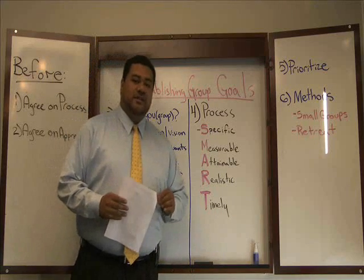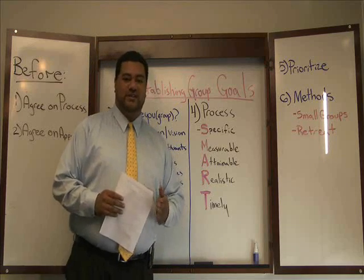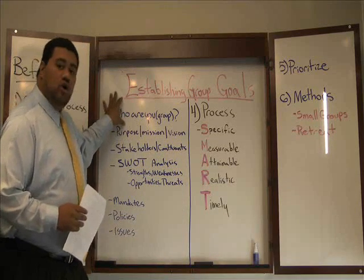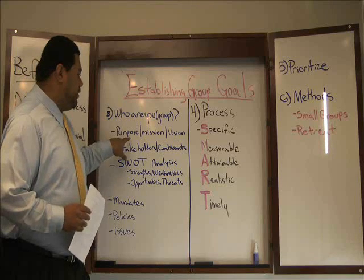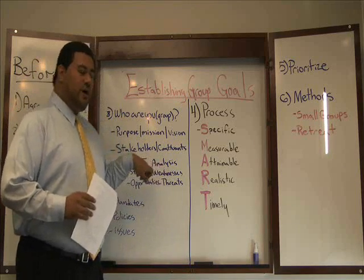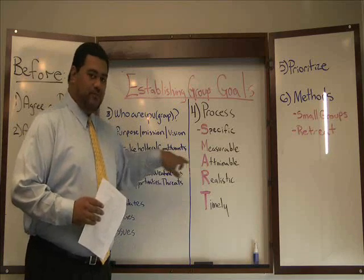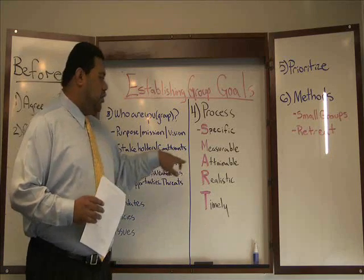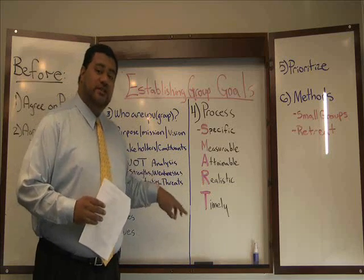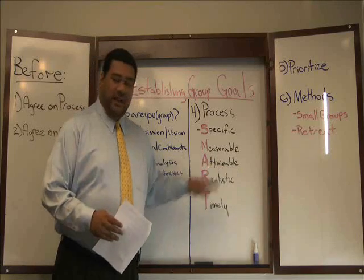Attainable is very important because you have to be realistic. This is why you started out by answering who you are as a group — your purpose, mission, vision, and stakeholders, and most importantly your SWOT analysis. Is it attainable within your strengths, or is it not attainable because you have specific weaknesses or lack certain things to attain that goal?